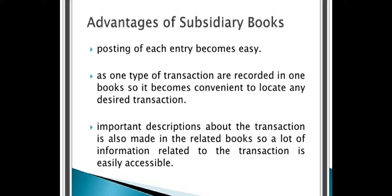Every business organization records all transactions, so why do we need subsidiary books? There are some advantages for subsidiary books — that is why big business concerns maintain them. The first advantage is that posting of each entry becomes very easy. In journal entries, we cannot categorize every entry, but in subsidiary books, we categorize the transactions. The same correlated transactions are recorded in a separate book, which becomes very easy for the accountant.